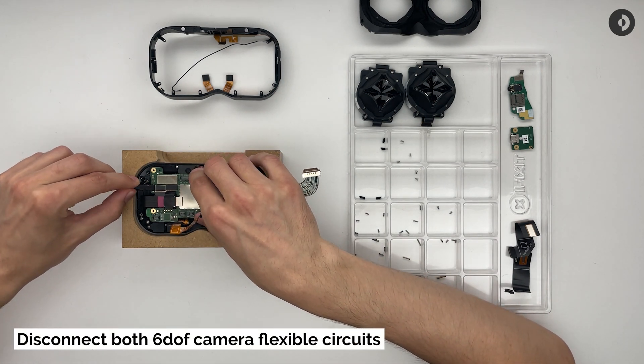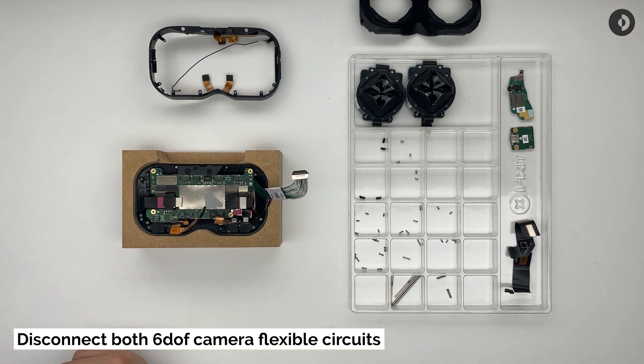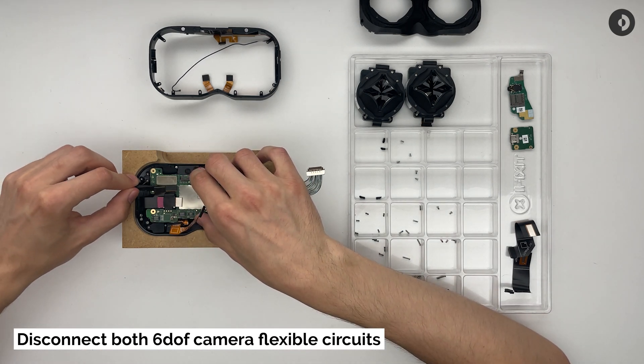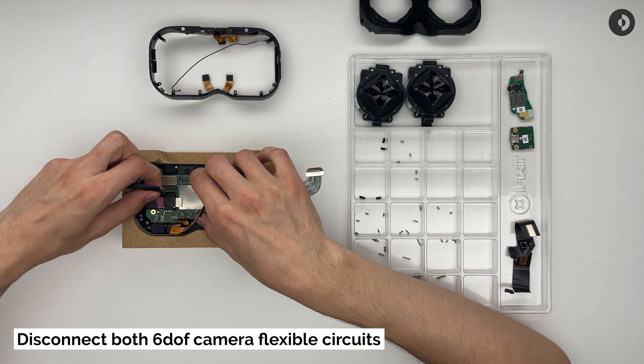Left and right of the mainboard, you will find the two connectors responsible for powering the six DOF cameras. Disconnect these FPCs as usual by gently lifting them up.